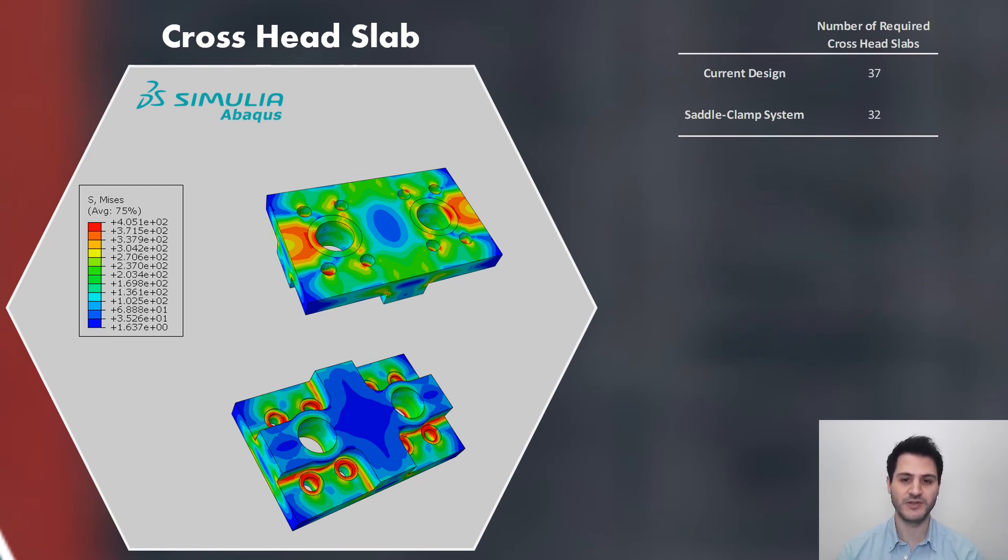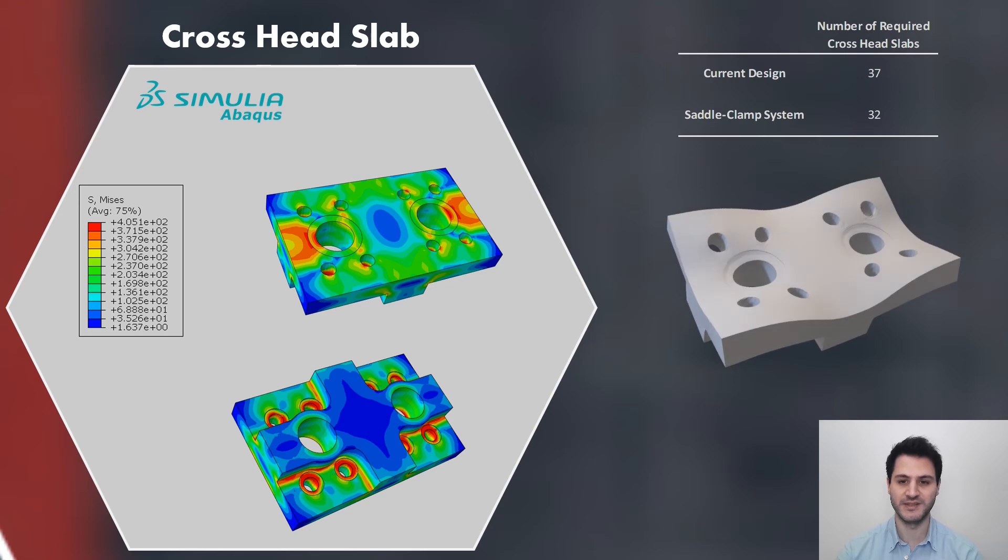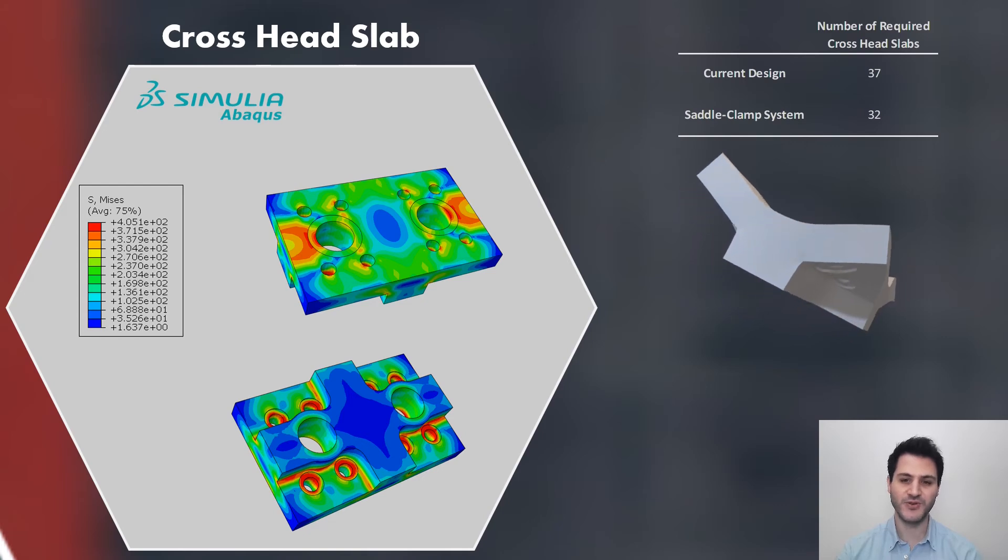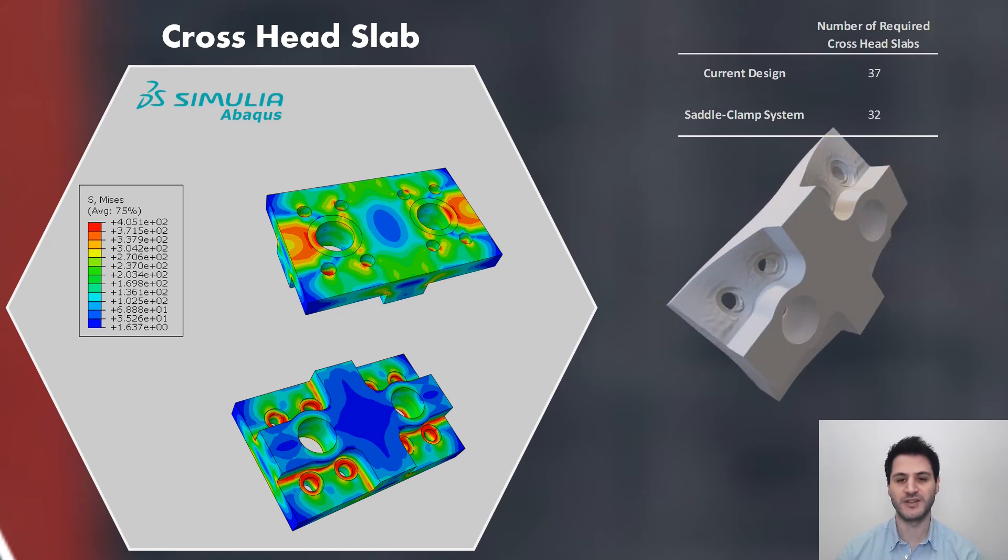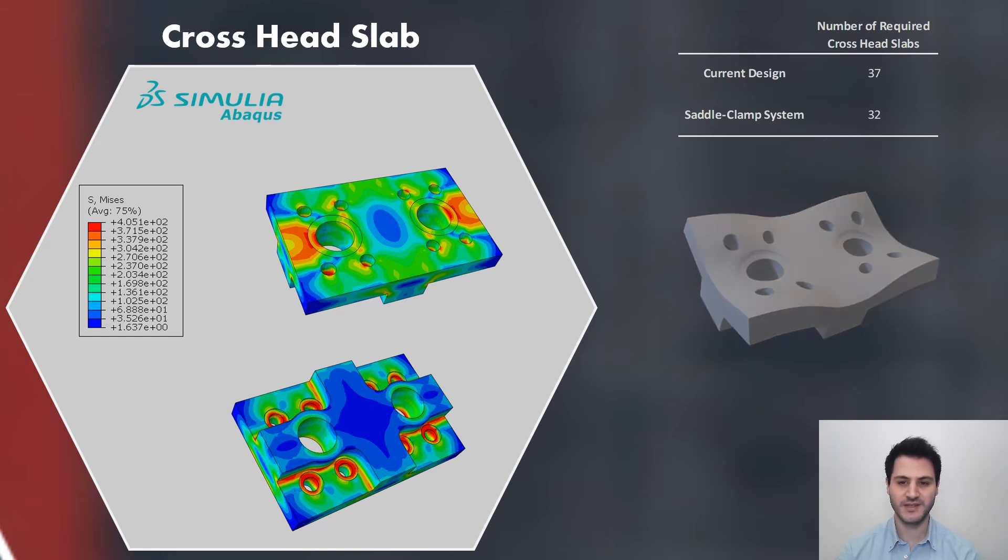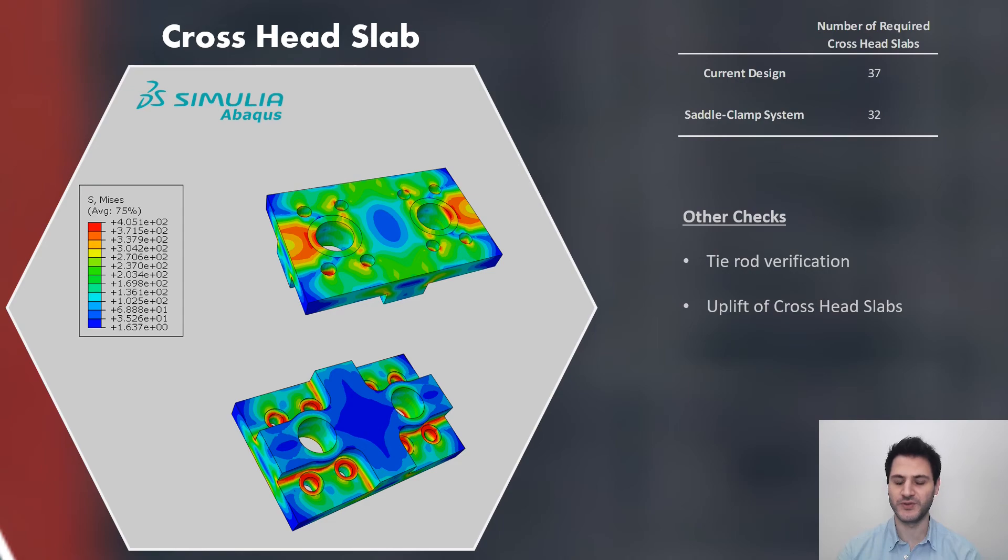Von Mises stresses under ULS loading are verified through finite element analysis model and this is the exaggerated deformed shape taken from Abaqus. Small portion of the anchor block is also defined for boundary condition. Strand loads and post-tensioning loads are defined externally. Tie rods and uplift of the crosshead slabs are also checked to verify the system.